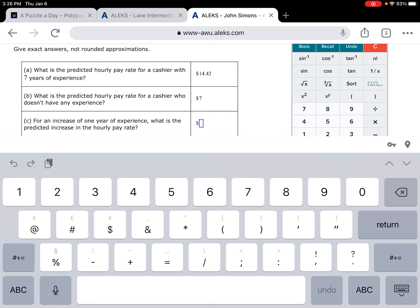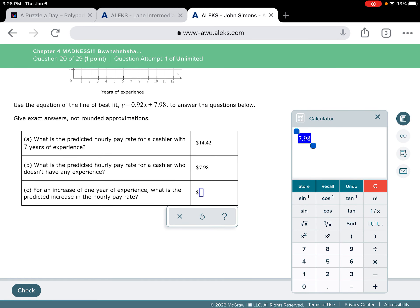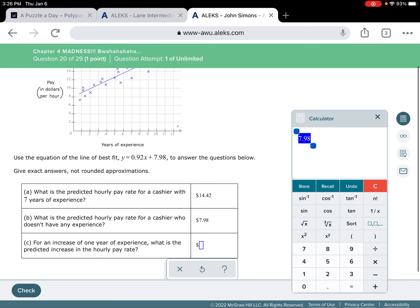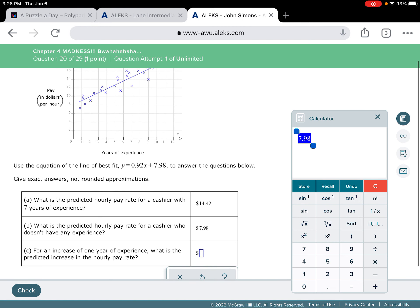So pretty much you can just cross out the X term when you get asked about something where your X coordinate is 0. So let's put that in. So 7.98, so that is, incidentally, our y-intercept. And then it says, for an increase of one year of experience, what is the predicted increase in the hourly pay rate? Well, all you got to do is look at the equation, and you can see that for every year, you're multiplying it by 0.92. So that 0.92, like after one year, you go up 92 cents. After another year, you go up another 92 cents. So that's your answer. So it's all kind of right there in the equation.